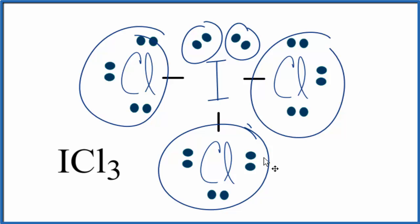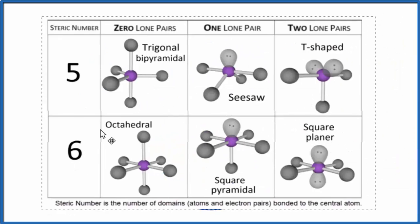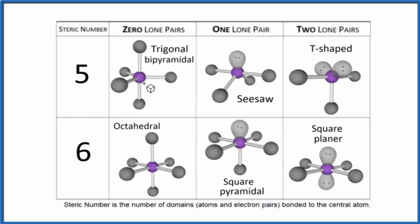So we had five things attached to the central iodine, two lone pairs. If we couldn't visualize that, that one's kind of complicated, we could look it up on a table. We have five things attached. So that's our steric number, five. And we said there are two lone pairs. So we end up with this T-shaped molecular geometry for ICL3.